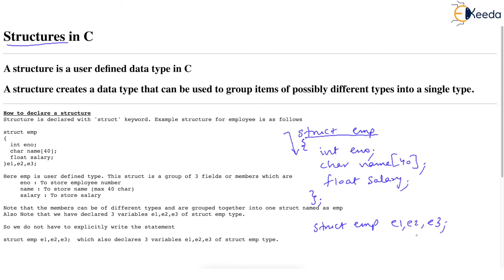Now we said E1, E2, E3 are variables which have place in the memory and each of these variables will store whatever this EMP structure has. So each of these variables will store three members, namely eno, name and salary. So this is the way how we declared the variables in the previous video.